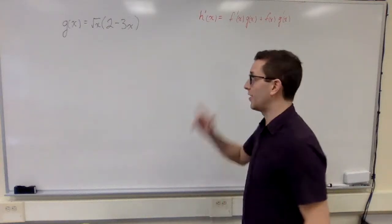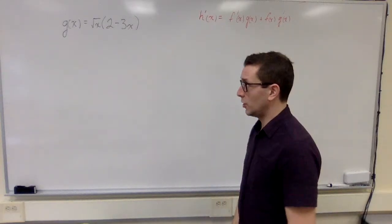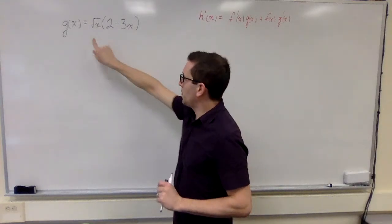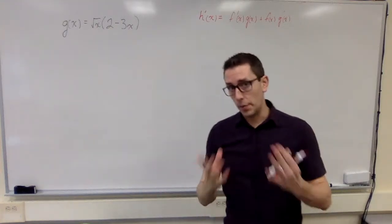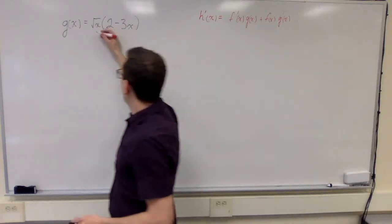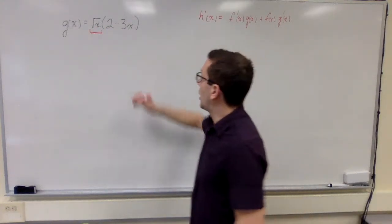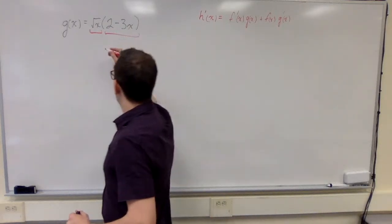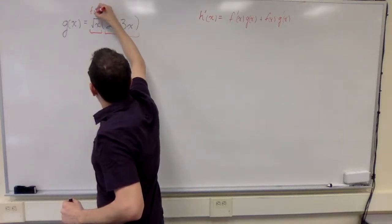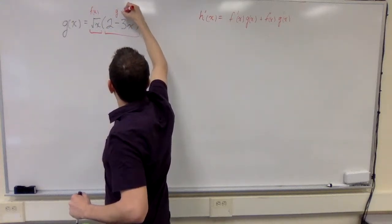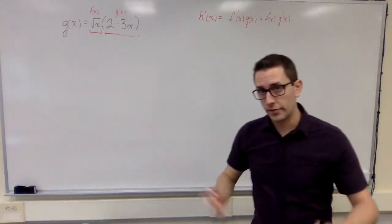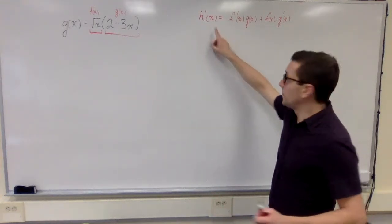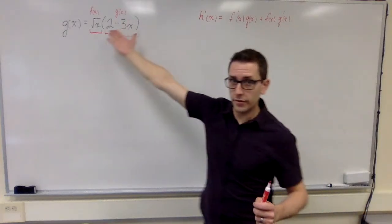Welcome to a video tutorial on the product rule for derivatives. I'm going to show you how to find the derivative of a function that is a product of two separate functions. I've got one function, root x, and another function, 2 minus 3x. I'm going to call those my two functions — f of x and g of x. Since I've got a product of two functions, I can use the product rule for derivatives.